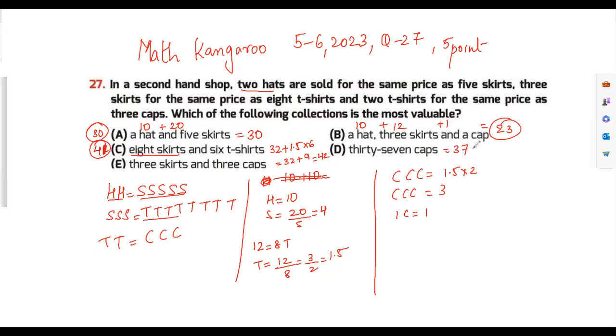This is 32 plus 9 is 41, and 37 caps which is 37, and three skirts which is 12, and three caps which is 3, so that becomes a 50. Now which of the collection is the most valuable? The one which is most valuable with the most amount of value is 41, so my answer is option C.